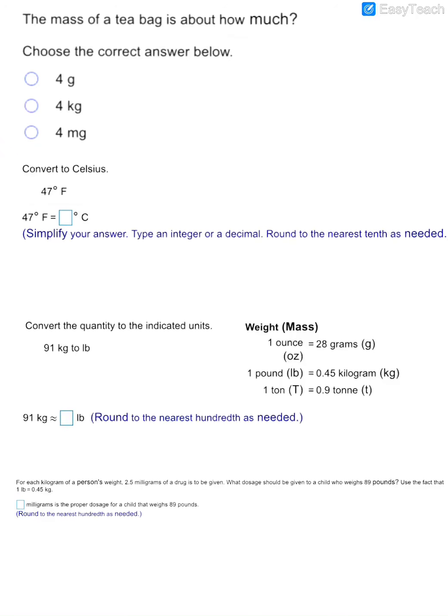Now we're being asked what the mass of a tea bag is about how much in terms of our metric system. So think about this. When we have a gram, you can think about that being the weight of a paper clip. So it's pretty light.